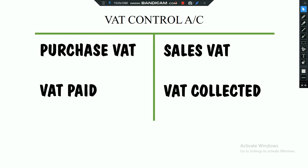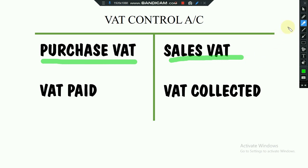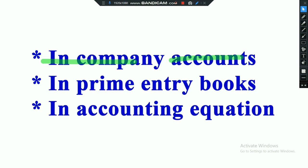If I develop the VAT Control Account, I put purchase VAT on the debit side and sales VAT on the credit side. How to memorize it? It's very simple: purchases are normally on the debit side, therefore VAT on purchases is also on the debit side. Sales are generally on the credit side, therefore sales VAT is always on the credit side. For purchase VAT we say VAT paid; for sales VAT we say VAT collected.